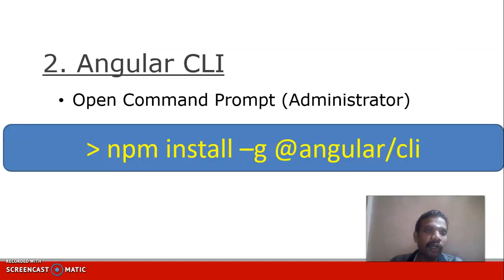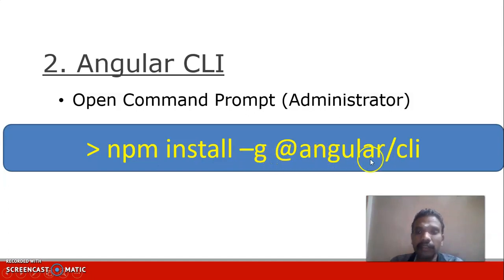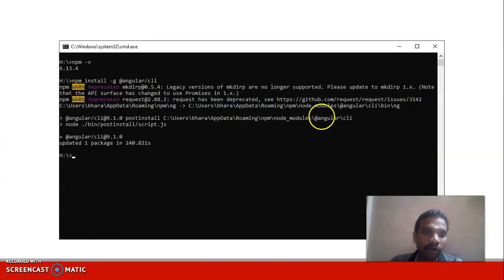For the second software, Angular CLI, open a command prompt in administrator mode and type: npm install -g @angular/cli. The -g flag means global installation. This will install Angular CLI on your machine.